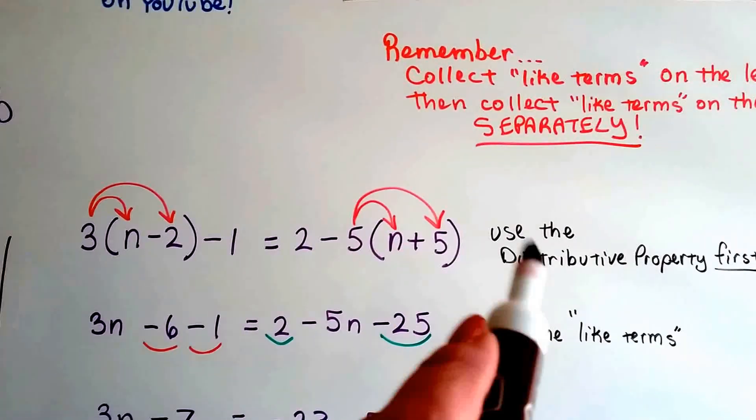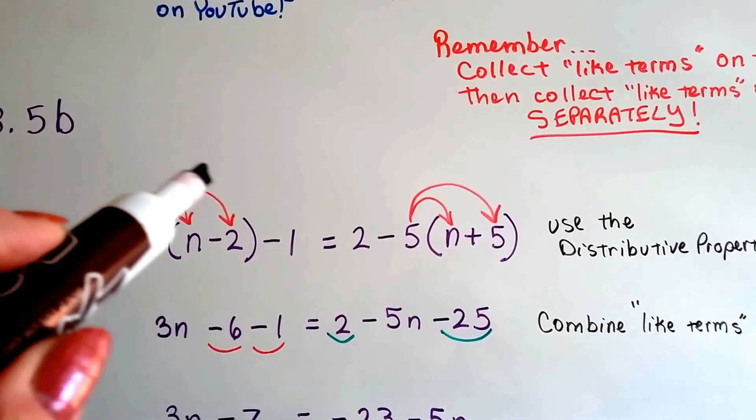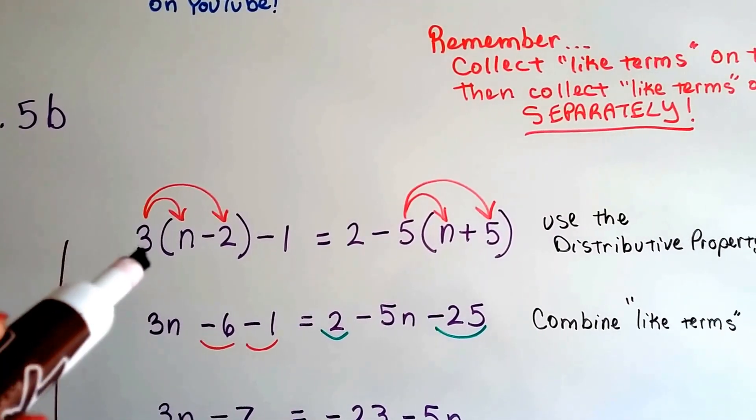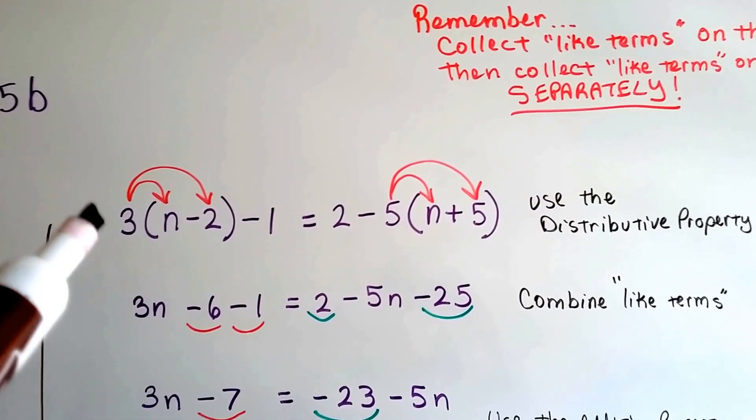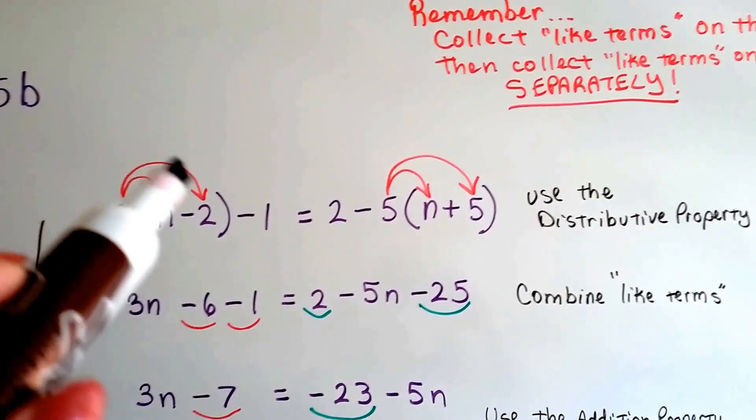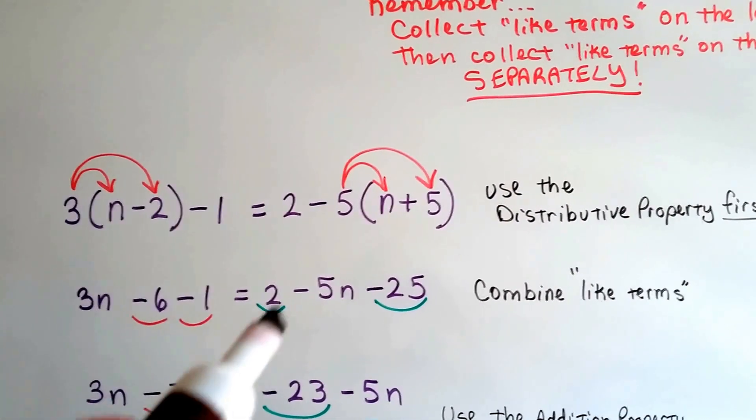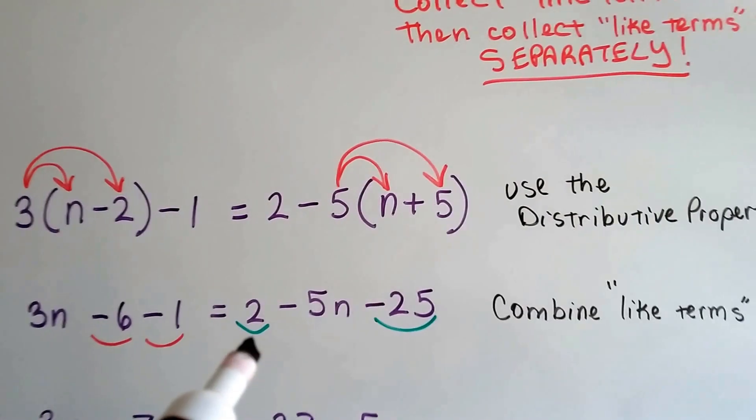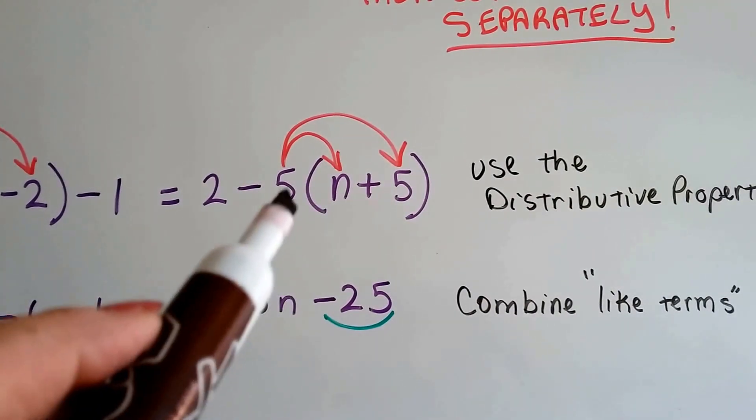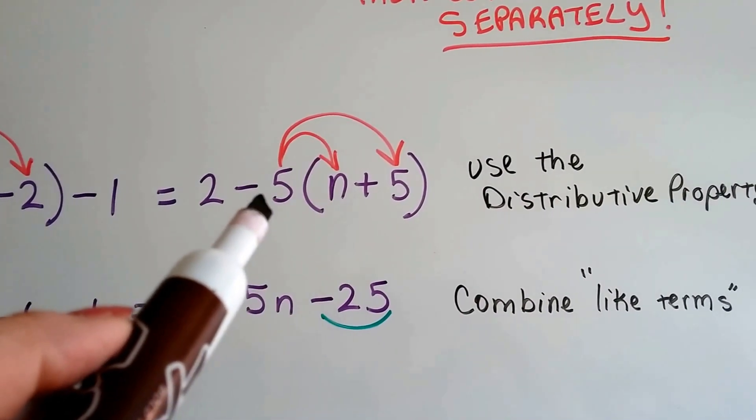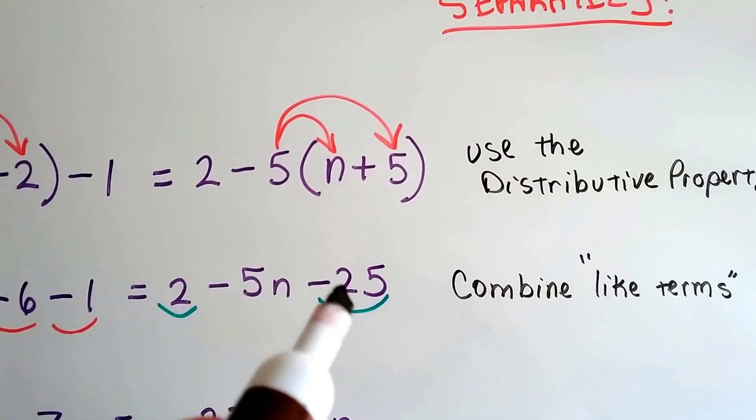So the very first thing we're going to do is use the distributive property first. We're going to distribute this 3 to the n, and then 3 minus, and then minus the 3 times 2. So we get 3n minus 6. Because we've got 3 times a negative 2, it's a negative 6, and we drop down our negative 1. And on this side, we've got 2 minus 5n, and that's added to a negative 5 times a positive 5. So that's going to be a negative 25.